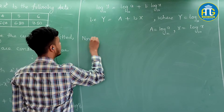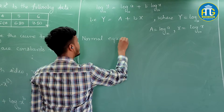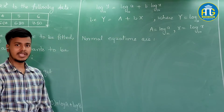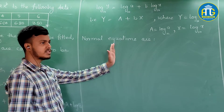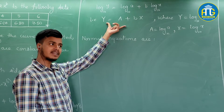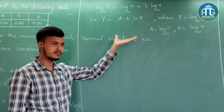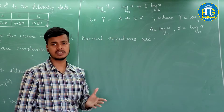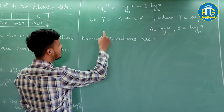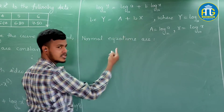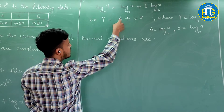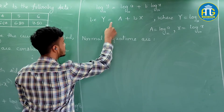Normal equations: we have two constants, A and b, so we need two normal equations. Multiply by the coefficient of each constant and take summation. The coefficient of A is 1 and the coefficient of b is X.